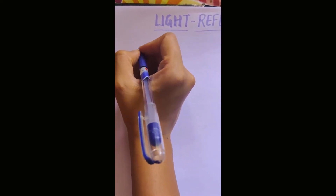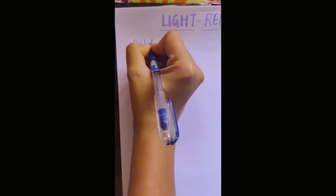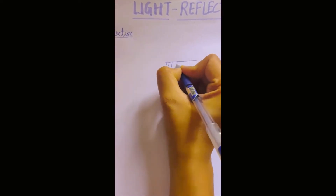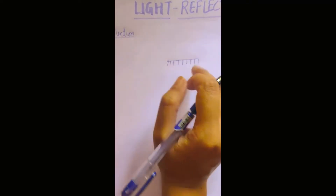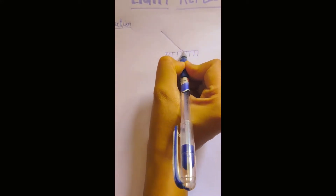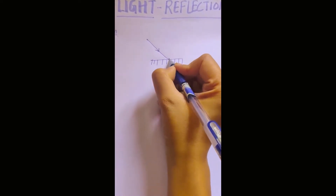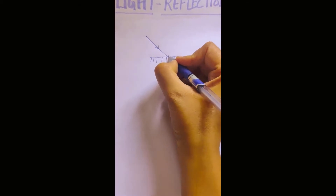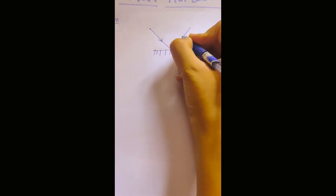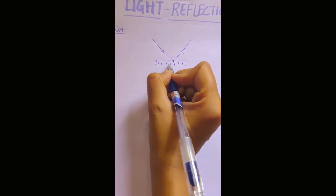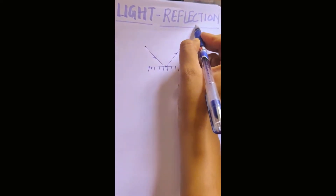In class 8th you have already read about reflection. Reflection is the bouncing back of light from a plain polished surface. Suppose this is a surface — plain and polished — and when light falls on this surface, all of the light falling on the surface will be completely bounced back. This bouncing back of light from the plain surface is known as reflection.